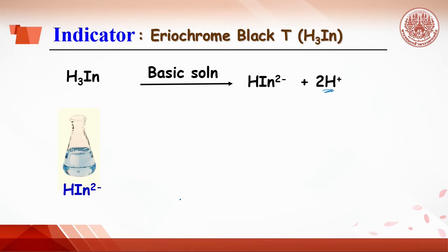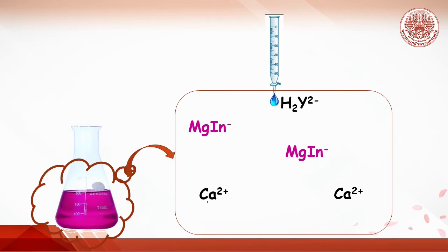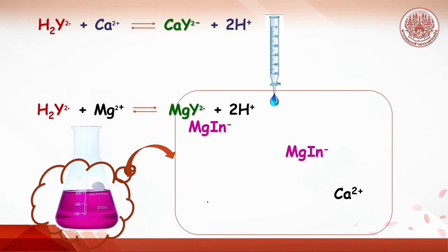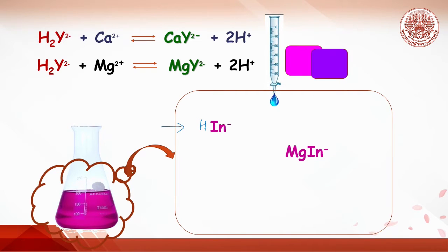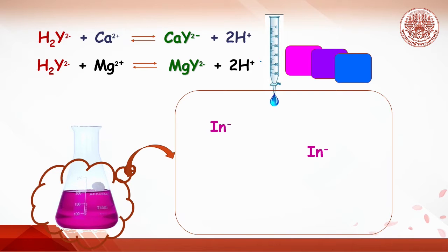In the presence of magnesium ions, this indicator forms a stable wine-red complex with magnesium. As EDTA is added, it reacts first with free calcium and magnesium ions, leaving the magnesium-indicator complex alone until no more free calcium ions remain. Then EDTA reacts with the magnesium-indicator complex, releasing the indicator, which reverts to its free form — sky blue. The color changes from wine red to violet, then to sky blue at the endpoint.